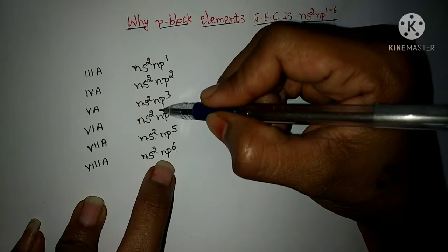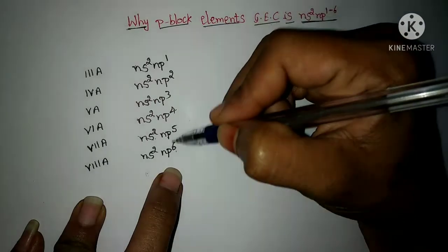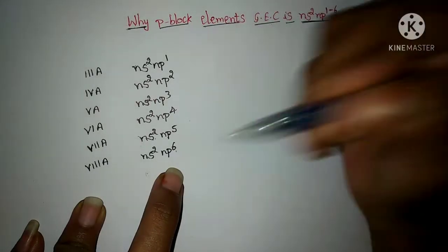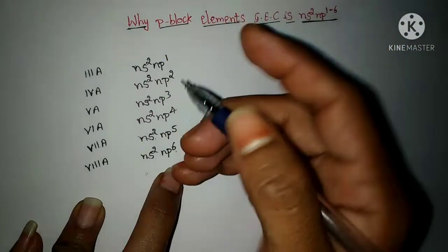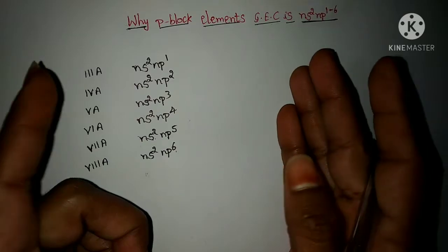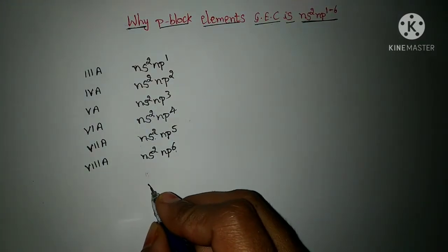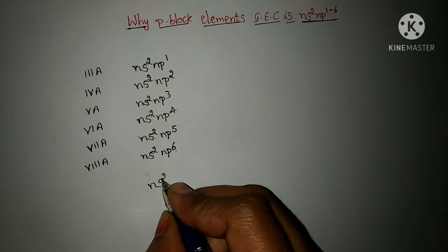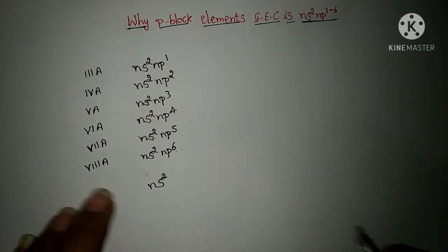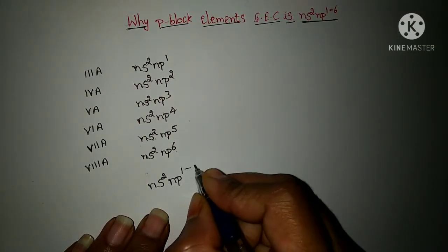Next, in the valence shell P orbital — N is the valence shell — in the P orbital, the number of electrons is 1, 2, 3, 4, 5, 6. So total electrons present in the valence shell P orbital range from 1 to 6. Writing it commonly: in the valence shell S orbital, 2 electrons are there in all groups of elements, and in NP, electrons range from 1 to 6.